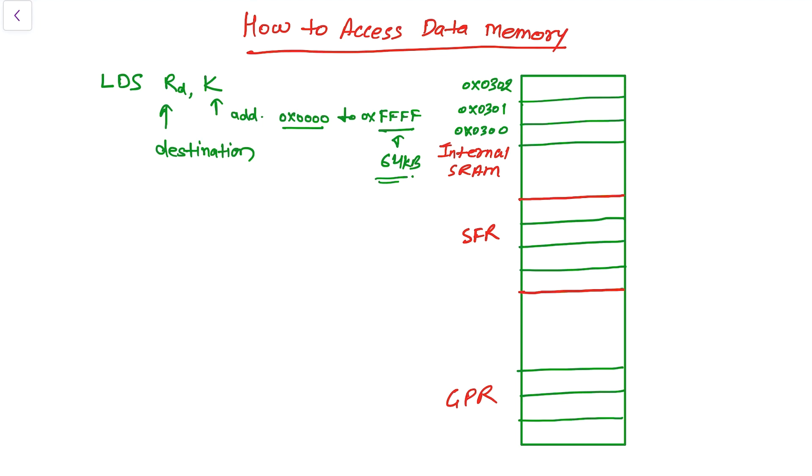This LDS instruction tells the CPU to load one byte from an address in the data memory which is pointed by this value K. The location in the data memory can be in any part of the data space. It can be one of the input/output registers, or it can be in the internal SRAM location, or it can be in the GPR.